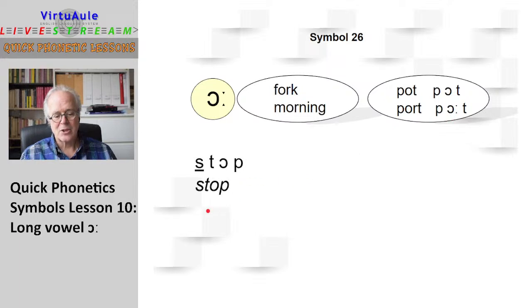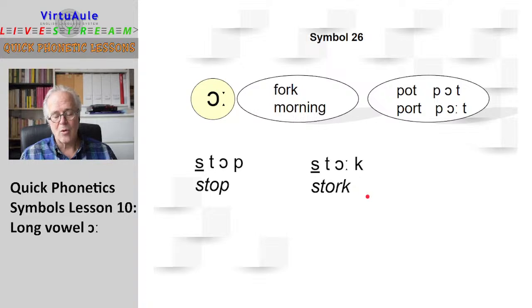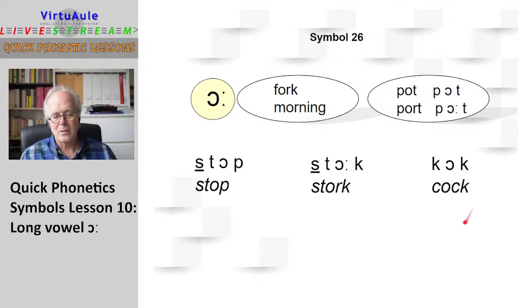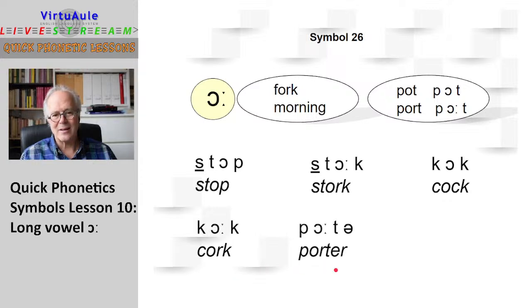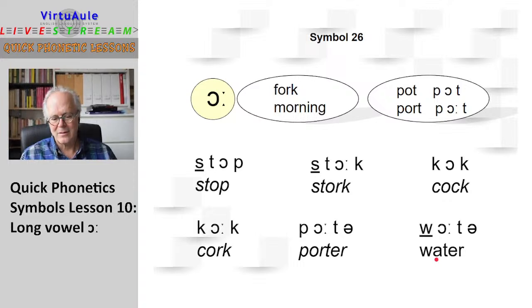You'll notice there is an R, but I'm not trying to pronounce the R because you can do this without pronouncing the R. The received pronunciation (RP) would be without the R. So it's not "stork" — it's "stork." "Cock." "Porter." "Water." Okay, that's the sound.